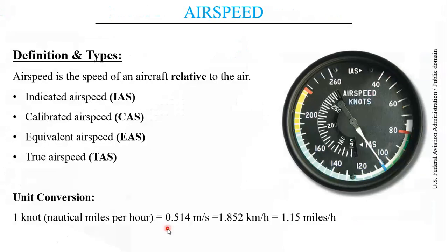One more thing to note is that the airspeed indicator has two different types of airspeed which it indicates: the IAS (indicated airspeed) and the TAS. There are two dials fitted within this instrument.